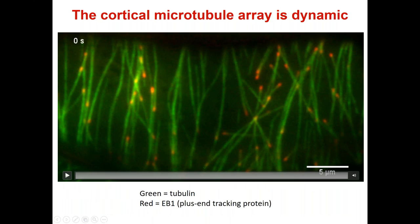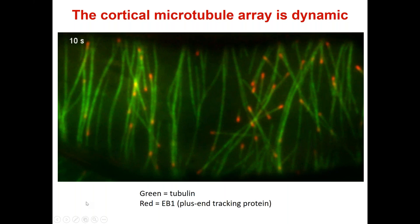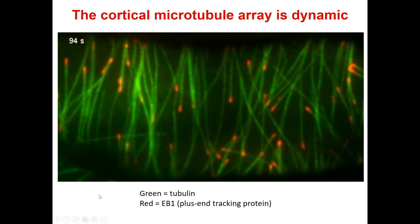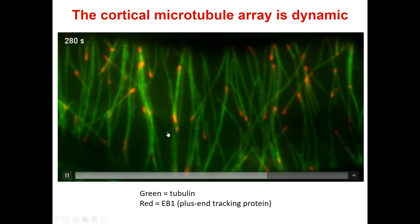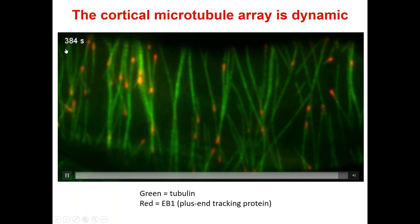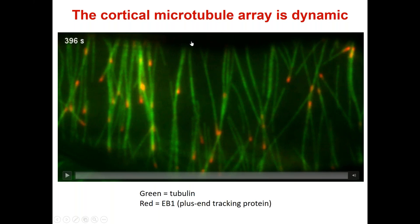The cortical microtubule cytoskeleton is very dynamic. Here's a movie from my lab — we're looking at GFP-labeled tubulin and mCherry-labeled EB1, a plus-end tracking protein, which lets us visualize the growing tips of microtubules. You can see that this cytoskeleton is very dynamic, with new microtubules constantly nucleated. But even over several minutes, the overall net orientation of the microtubules is preserved in this vertical direction.